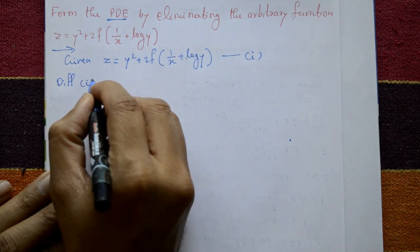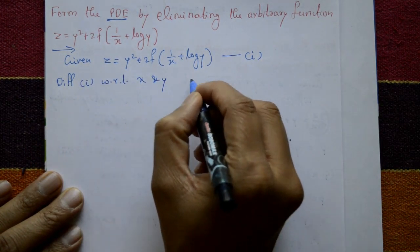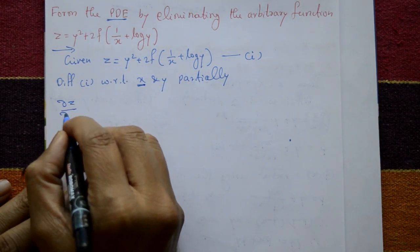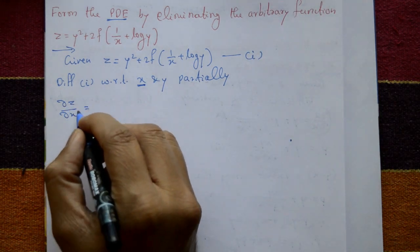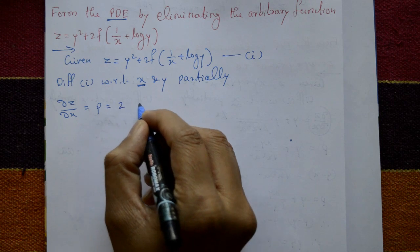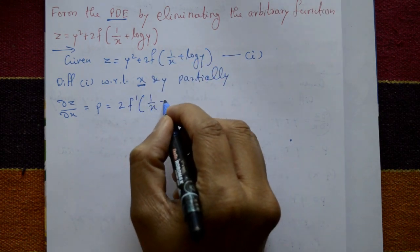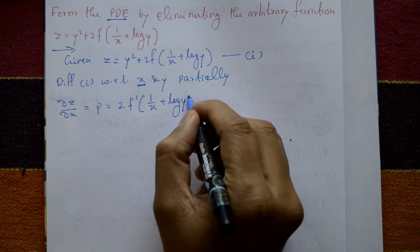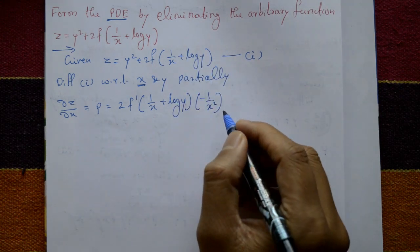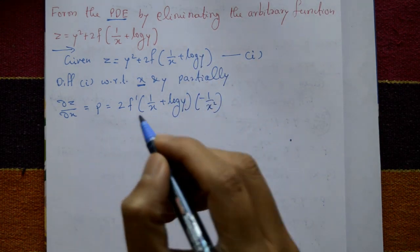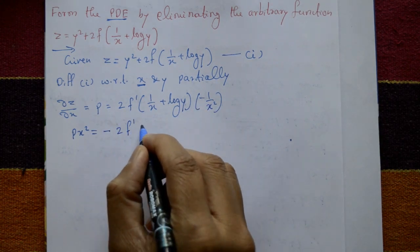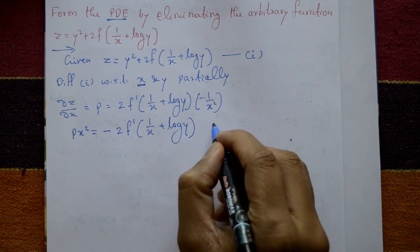Now differentiate equation 1 with respect to x partially. dz/dx equals p. With respect to x, y is treated as a constant, so the y² term gives 0. Differentiating: 2 times f dash of (1/x + log y), then differentiate (1/x) gives minus 1/x². Log y is 0. Cross-multiplying: px² = minus 2f dash of (1/x + log y). Call this equation number 2.